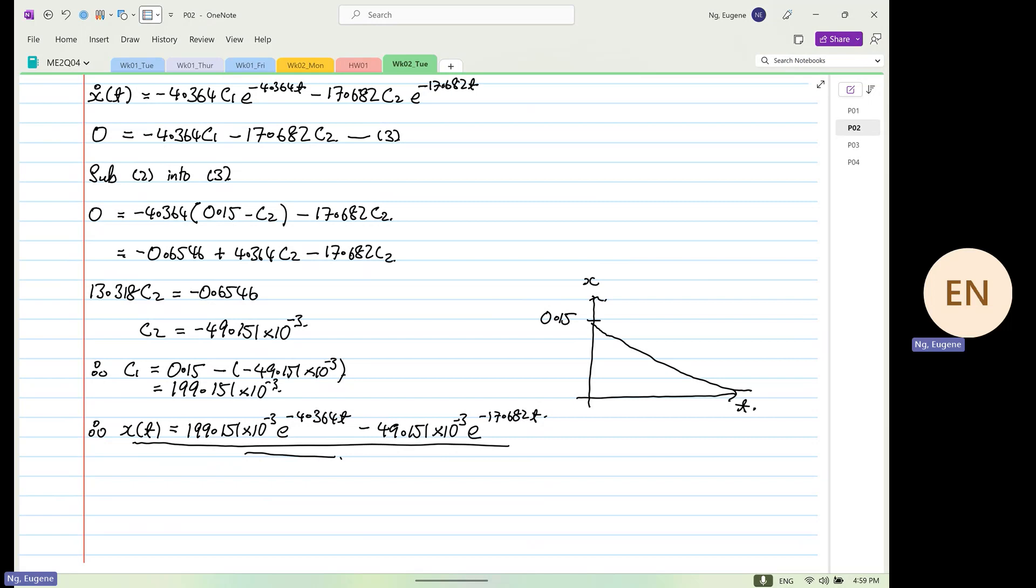So now we are going to key in the expression into your calculator and I'll do it slowly. Can you type 199.151 times 10 to the power of minus three? Then we go for the exponential function. It's not the log. You press shift natural log, bracket, minus 4.364. And I want you to stop down there once you enter that, stop. So from here, I want you to see the alphabet in red: a, b, c, d, e, and so on. When you are free, you...